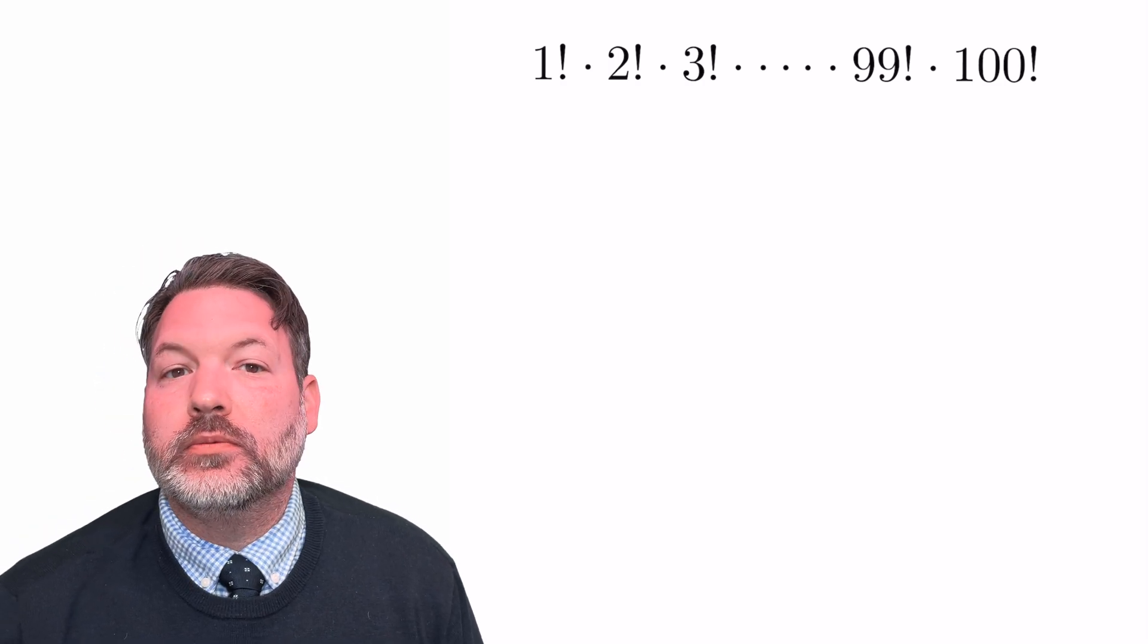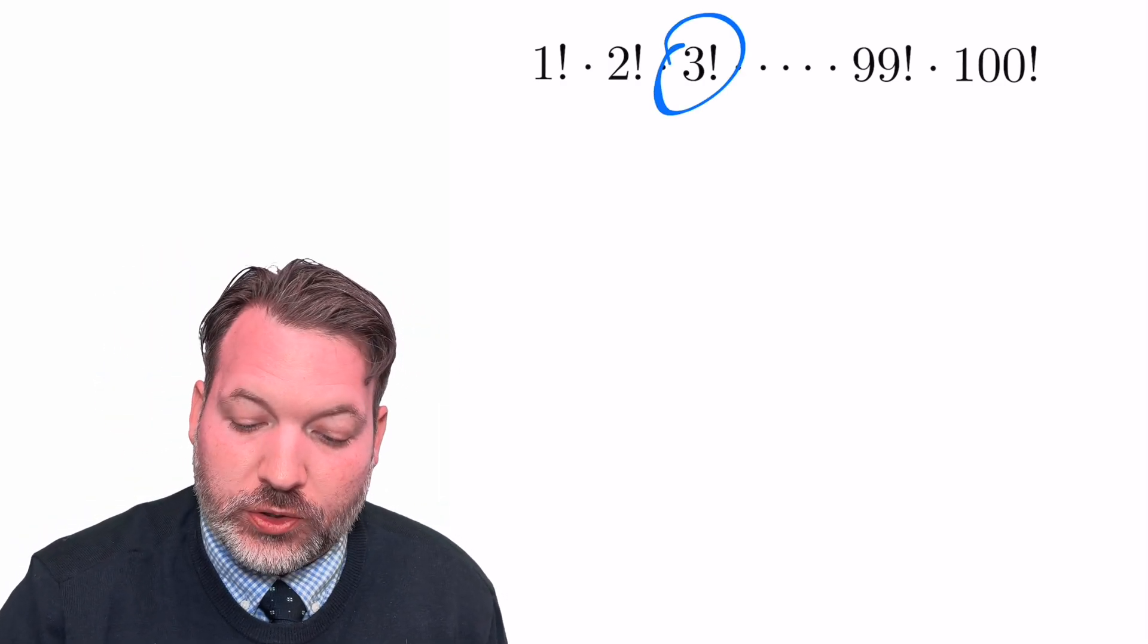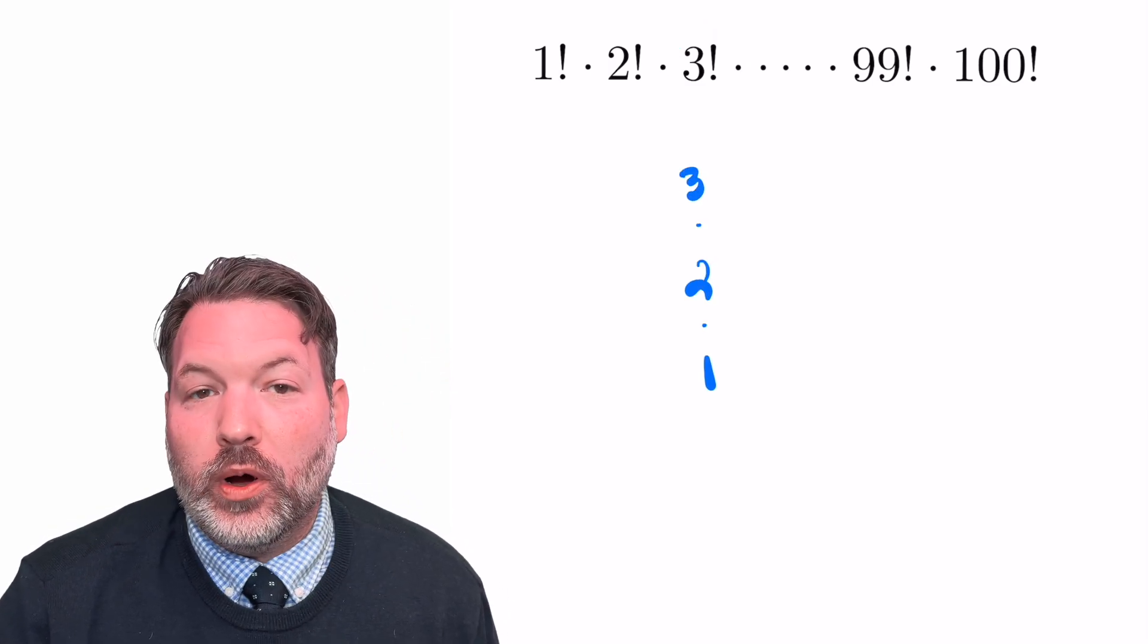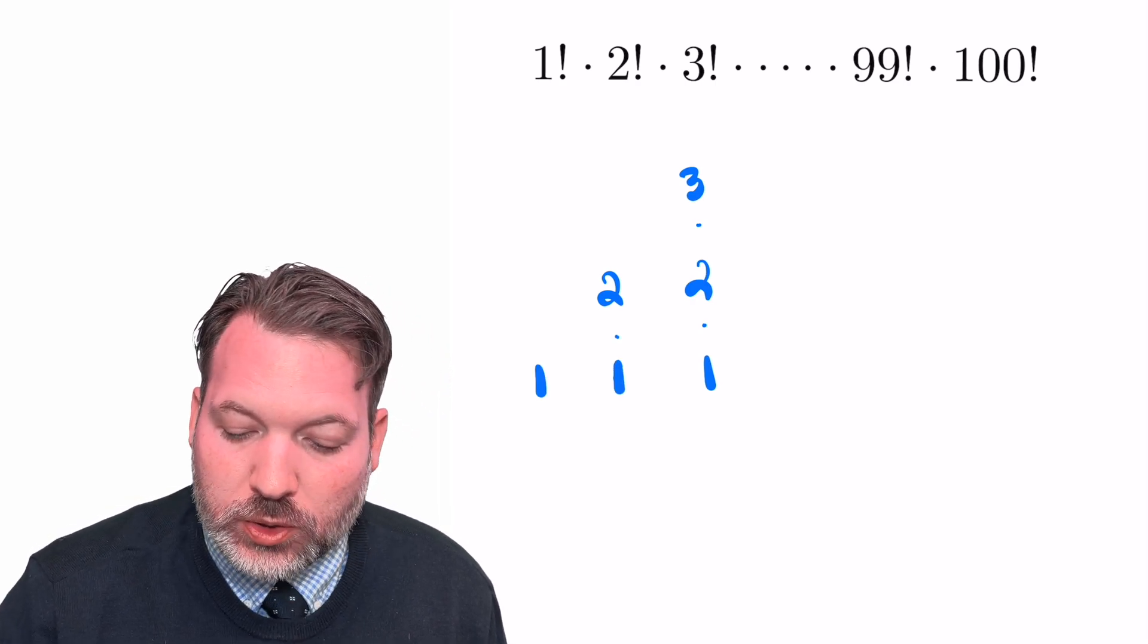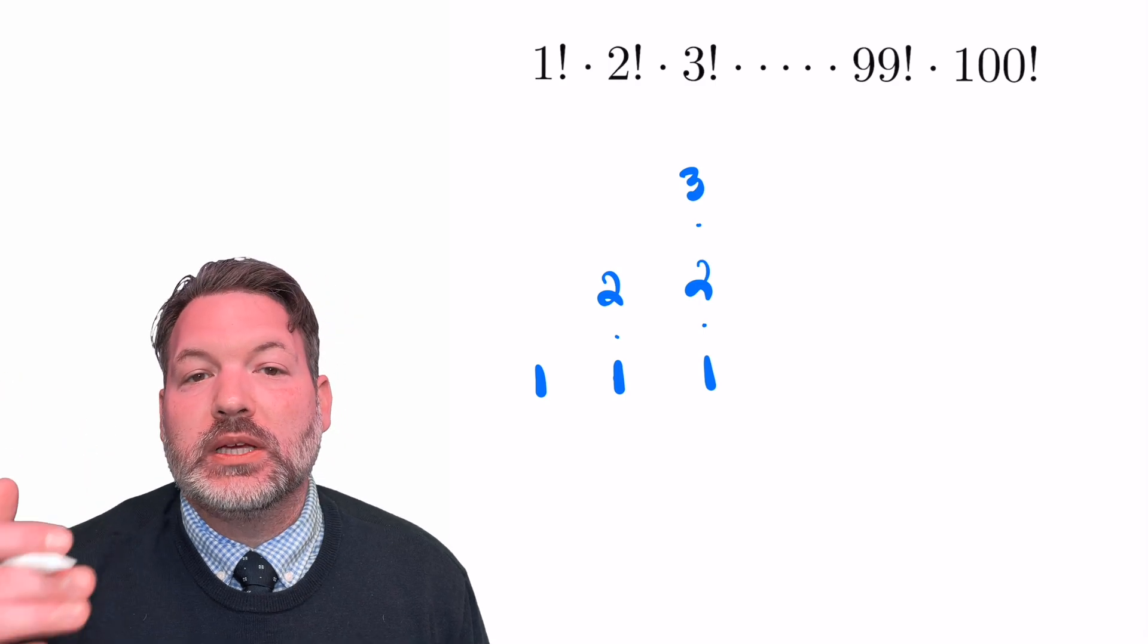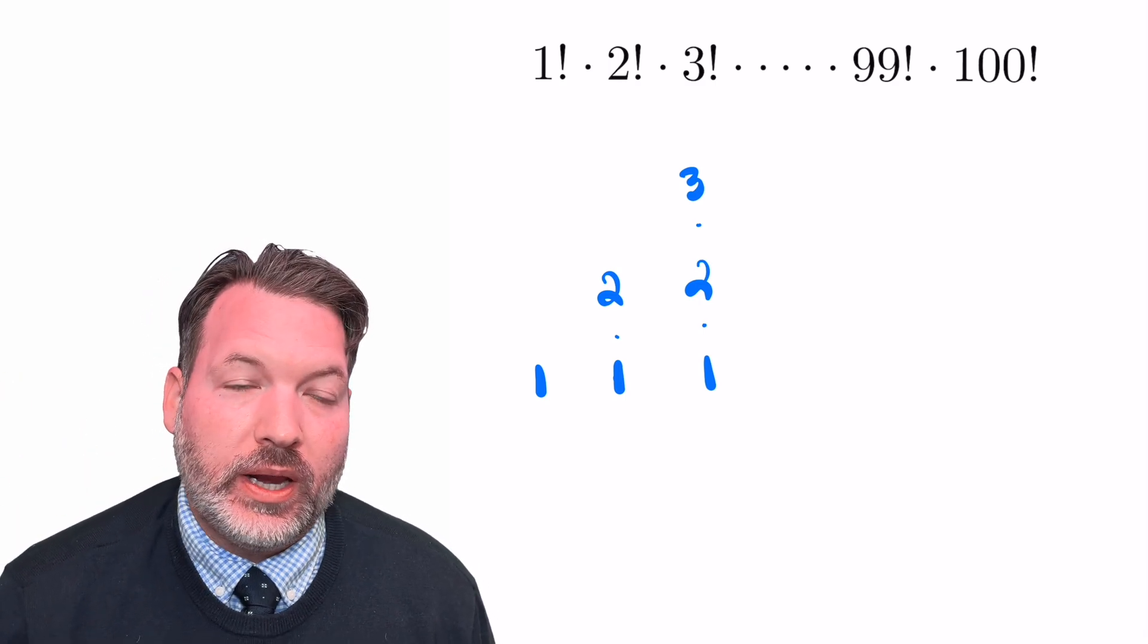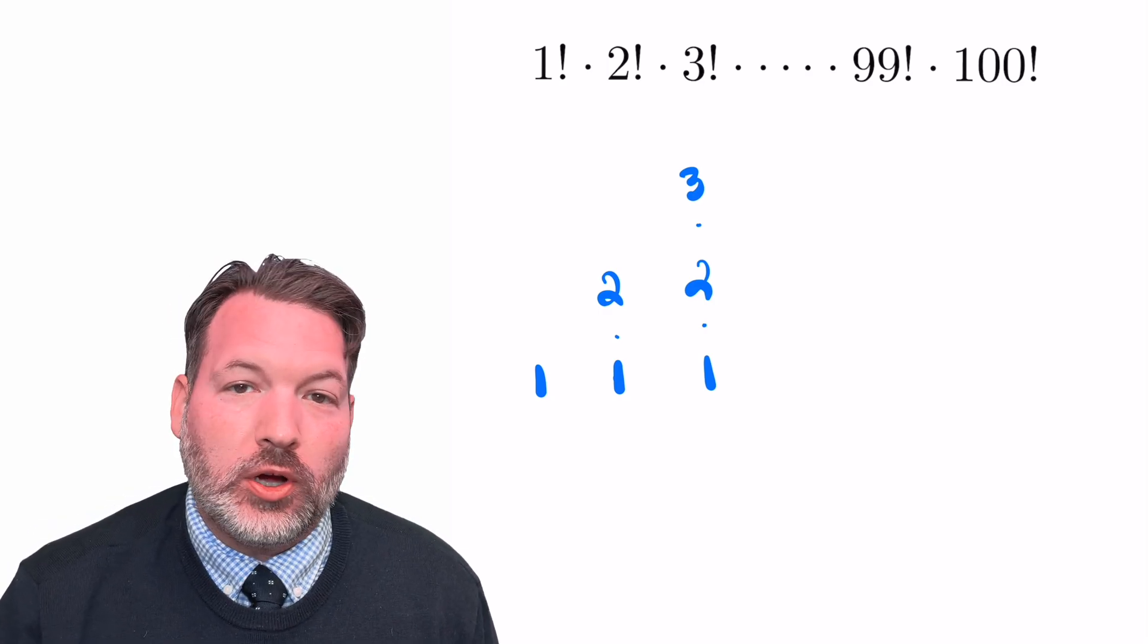All right, there are a lot of moving parts here, so let's start with what is a factorial. If we have something like 3 factorial, that means 3 times 2 times 1. 2 factorial is 2 times 1. 1 factorial is just 1 itself. 4 factorial would be 4 times 3 times 2 times 1. We just start at the number itself for any natural number, any counting number. We count all the way back down to 1, and then we multiply those all together.